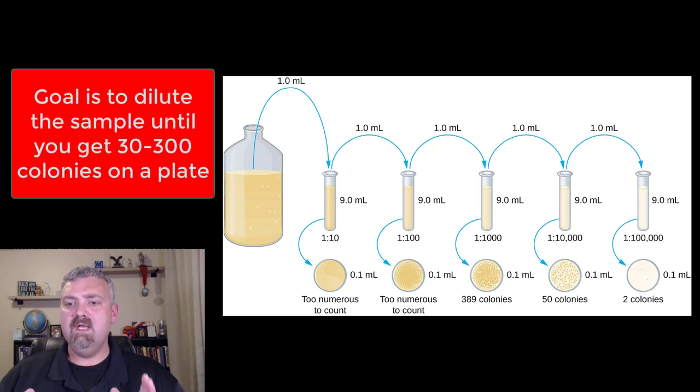And just so you know, the ultimate goal is to try to get somewhere between 30 and 300 colonies. Too few and you just can't learn anything from it. Too many and you have trouble counting them. And it's really hard to tell where kind of one colony stops and the next starts.